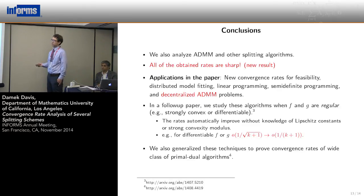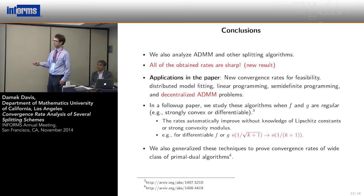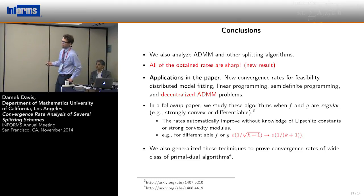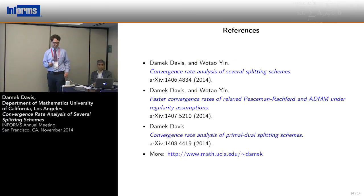In conclusion, in the paper we analyze many more methods including ADMM. All the rates are sharp. This is a new result. In fact, all the little o results weren't known before. There's a lot of applications in the paper - new convergence rates for feasibility problems, distributed model fitting, linear programming, semi-definite programming, and decentralized ADMM. In a follow-up paper, we showed that Douglas-Rachford splitting and ADMM automatically improve when f and g have some regularity property. We already saw this for differentiable f and g. In the end, we actually generalized these to a large class of primal dual algorithms. We noticed a common pattern in splitting algorithms that generalized to a lot of methods. If you're interested in applying these techniques, take a look at the paper.